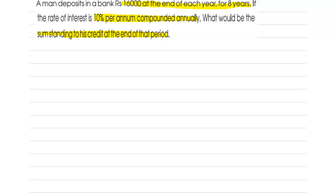Here in this problem, it is given that 16,000 is paid every year, that is at the end of every year the amount is paid. Therefore, it comes under annuity.